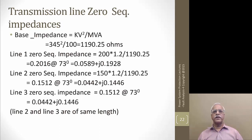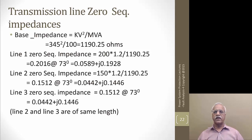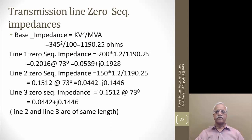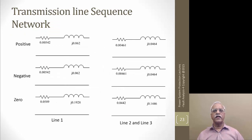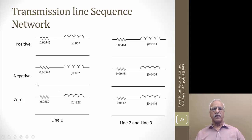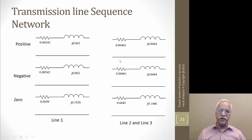For transmission line zero sequence impedance, using the same base impedance of 1190 ohms, line 1 zero sequence is 0.0589 + j0.1928 per unit. Line 2 and line 3 have the same line lengths, so their zero sequence impedances are 0.0442 + j0.1446 per unit each. The whole network showing line 1 positive sequence, line 2 positive sequence, negative sequence, and zero sequence networks are shown here, with line 2 and 3 having identical impedances.